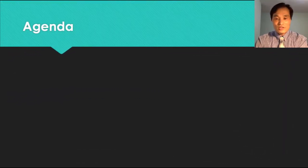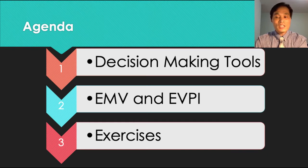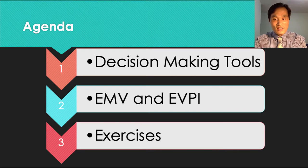This lecture is divided into three parts: decision-making tools, EMV (namely expected monetary value), and EVPI (expected value of perfect information), and exercises that cover what we learned in this course.